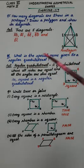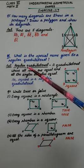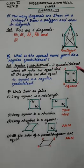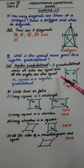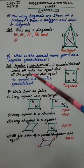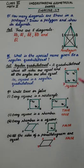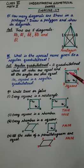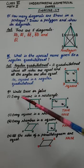Coming to question number 6: What is the special name given to a regular quadrilateral? First of all, let's see what a regular quadrilateral is — a quadrilateral whose all sides are equal and all the angles are also equal. So a square is a regular quadrilateral. This is a square where all 4 sides are equal as well as all the angles are equal. So a square is called a regular quadrilateral.